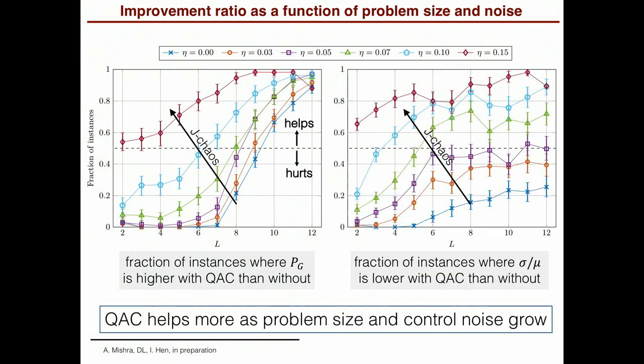So that's one measure. Another measure is what happens to the J-Chaos itself with quantum annealing correction. So now this is the fraction of instances where the J-Chaos measure is lower with QAC than without it. So we want this quantity to be large if quantum annealing correction is to help. And again, in the direction of increasing J-Chaos, you see that for sufficiently large noise, quantum annealing correction always increases the number of instances where this ratio is lower. All right. So this is other additional evidence that doing quantum annealing correction actually reduces the effect of J-Chaos.